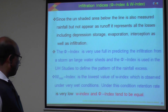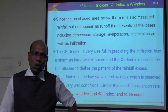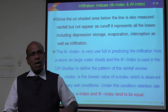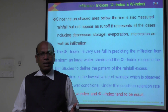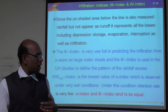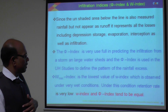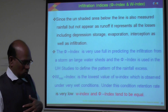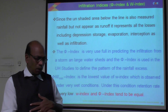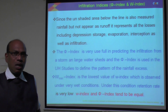The W minimum index is the lowest value of the W index, observed under very wet conditions — that is, when the soil is completely saturated and the infiltration rate is very, very low. That state is known as the W minimum index, and under this condition the retention rate is very low.